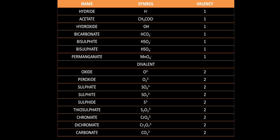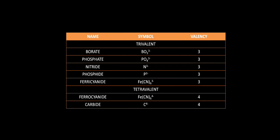Also thiosulfate S₂O₃²⁻, chromate CrO₄²⁻, dichromate Cr₂O₇²⁻, and carbonate CO₃²⁻. Many students — even final-year graduates — get confused with these because of weak foundational concepts. Clearing all these names and formulas will boost your confidence greatly. Trivalent acid radicals include: borate BO₃³⁻, phosphate PO₄³⁻, nitride N³⁻, phosphide P³⁻, and ferricyanide Fe(CN)₆³⁻.